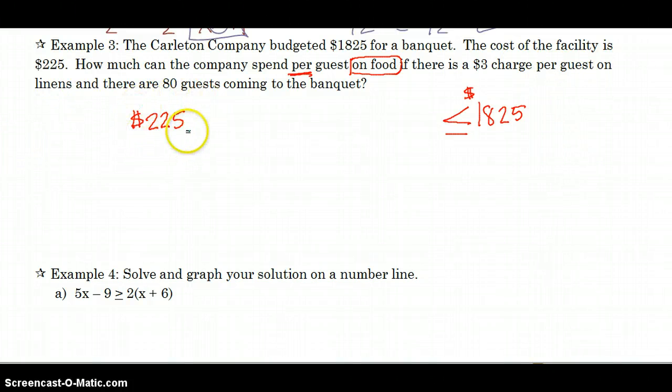How much per guest on food if there is also a $3 charge per guest for linens? So they're already spending $225 to rent the hall. They're already going to have to spend $3 per guest for linens. And there are 80 guests expected to come. They're having 80 guests. So we know that we have the cost of renting the place, $3 per guest for the linens. And we're checking to see how much money can we spend on food. So F is my variable that I'm going to label for food cost.